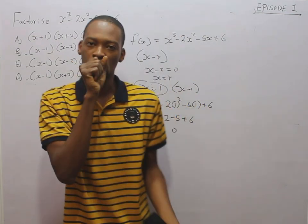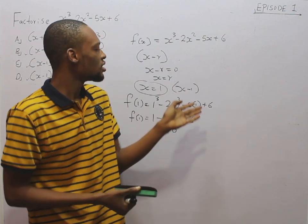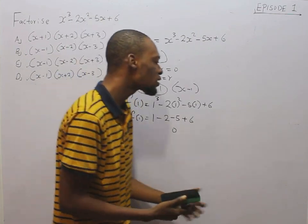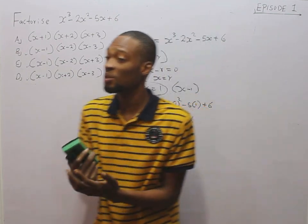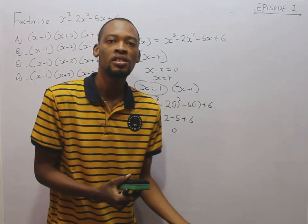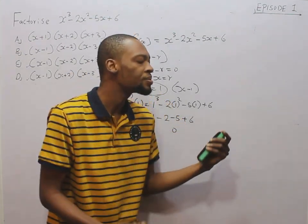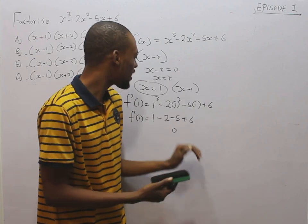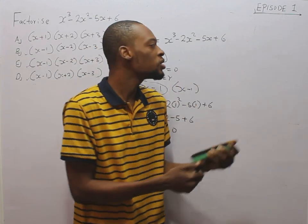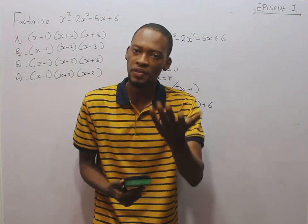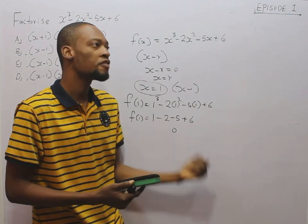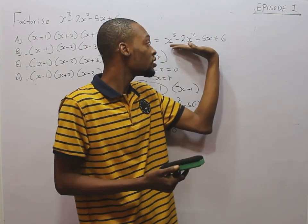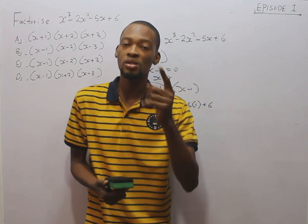To find the other two factors, we could continue guessing by substituting values, and anyone that gives you 0 is a factor. But what if the next factor is 6, or minus 5, or minus 3? You would have to guess up to 10 times, which is time consuming. Therefore, after getting the first factor, use long division to get the other two factors. To get the first factor, start substituting: try 1, if it doesn't give 0 try 2, then 3. It is easy to get the first factor this way.